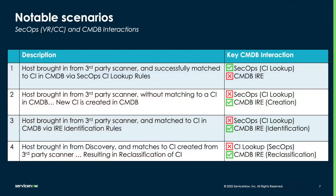Let's break down the scenarios we're going to step through. The first is a host brought in from a third-party security tool where we successfully match to a CI in the CMDB with the SecOps CI lookup rules — in this case, we never interact with the IRE. The second scenario is where we bring in a host and don't match to a CI in the CMDB; the winning interaction is actually IRE, as IRE will create that new CI. The third scenario is where we don't match with SecOps lookup rules, so we pass it on to IRE, and IRE — before creating a CI — does its own lookup and, in this edge case, may actually match to an existing CI, preventing the creation of a duplicate.